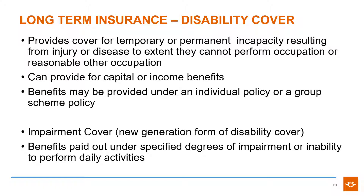Disability cover provides cover for temporary or permanent incapacity resulting from injury or disease, to the extent that an individual can no longer perform their occupation or any reasonable other occupation. It can provide for a capital lump sum or income in the form of monthly benefits, under an individual policy or a group scheme policy. Impairment cover is a new generation form of disability cover where benefits are paid out under specified degrees of impairment or inability to perform daily activities.